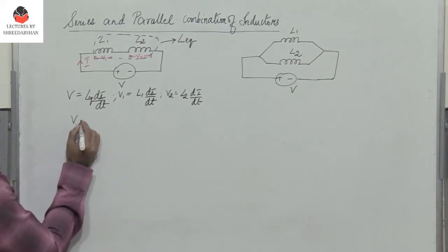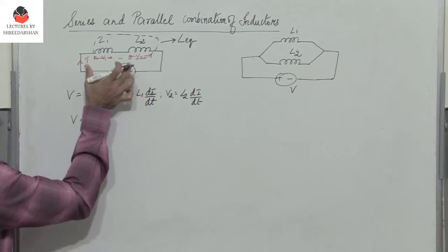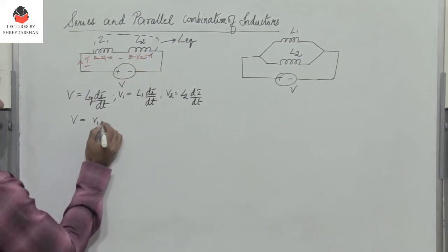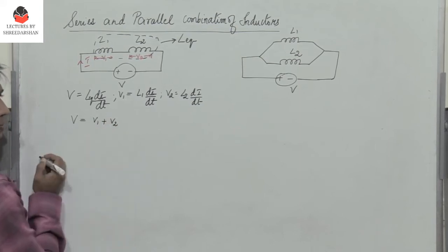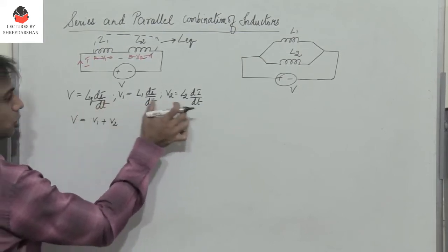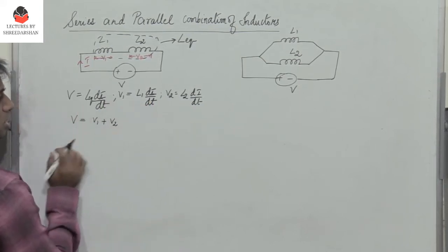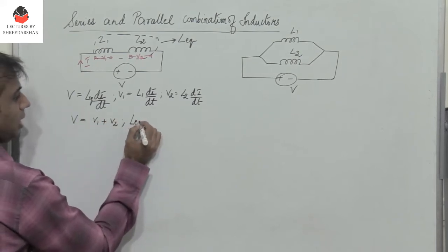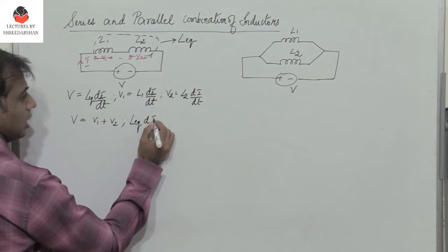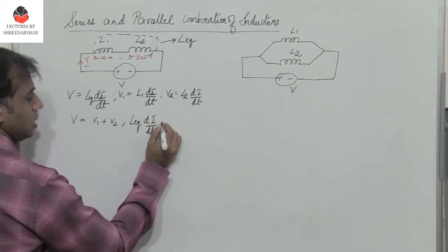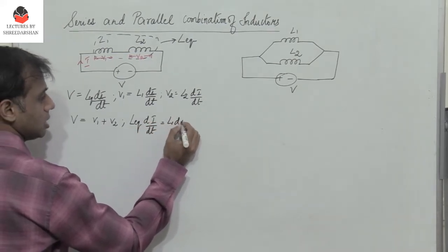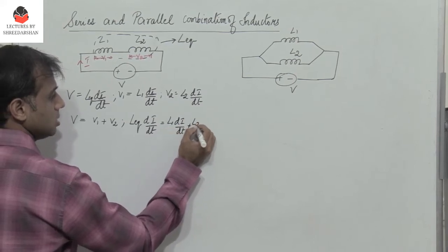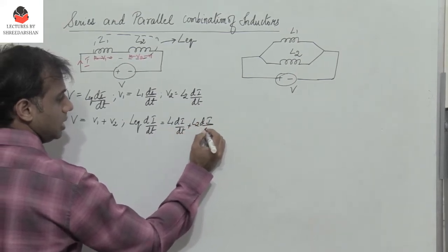The total voltage V is equal to the drop across L1 plus the drop across L2, which is V1 plus V2. Substituting, we get L equivalent times dI/dt equals L1 times dI/dt plus L2 times dI/dt.